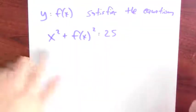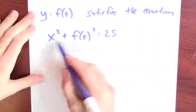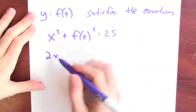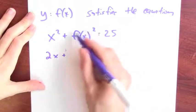Then I can differentiate. So if this is true for a bunch of values of x, then I can differentiate this. The derivative of this sum is the sum of the derivative, so the derivative of x squared is 2x plus the derivative of f of x squared.